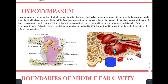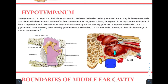The hypotympanum is the portion of the middle ear cavity lying below the level of the bony ear canal. The floor is related to the internal jugular vein and the internal carotid artery, separated by a thick plate of bone. Sometimes the floor may be dehiscent, leading to exposure of the jugular bulb to the middle ear cavity — this is important in mastoid surgery where a high jugular bulb may be barely covered by just a mucosal membrane.